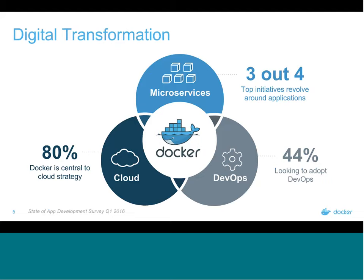Long-term goals for most enterprises is digital transformation. Digital means flexibility, thereby allowing organizations to transform at scale. Digital transformation is a whole-scale change to the business, starting with business operating models all the way down to the infrastructure. Docker is central to the digital transformation strategy, and it all starts with modernizing traditional applications using Docker Enterprise Edition.